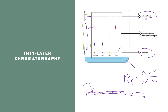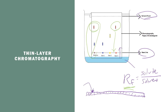Using this RF ratio, we can compare the attractions of the substance to water, and we can also start to analyze what those substances in the mixture are. For example, you'll see there are two things in your mixture. Because this first dot traveled the same amount as dye number three, we can conclude the mixture contains dye number three and some dye number one, but none of dye number two. The RF value will be the same for identical substances.